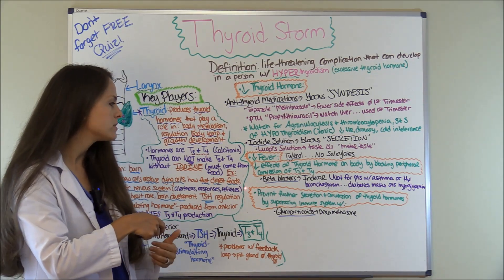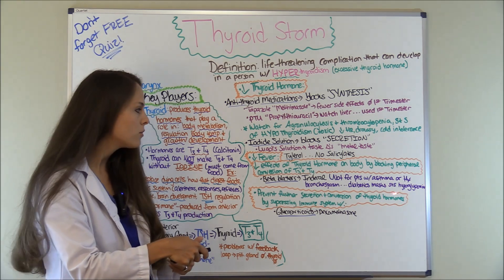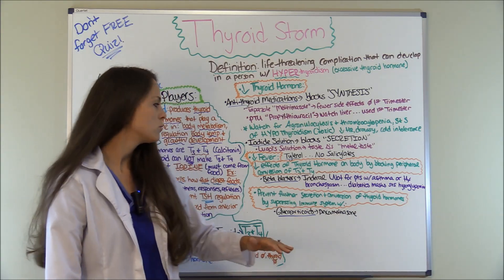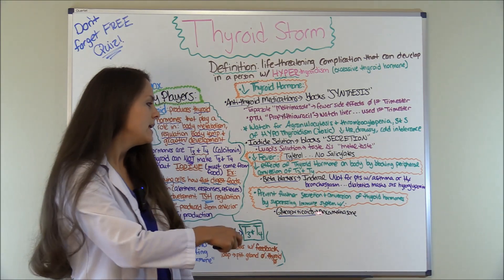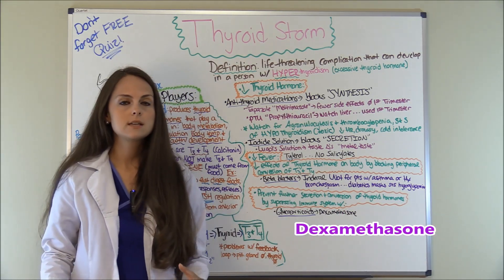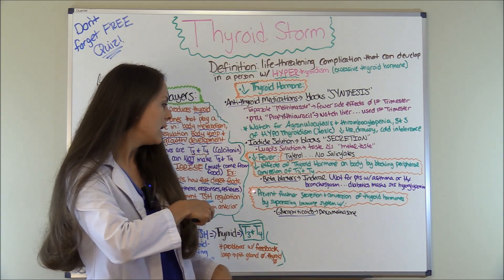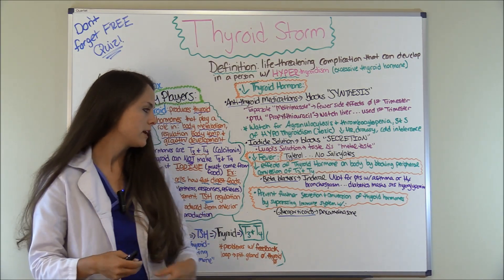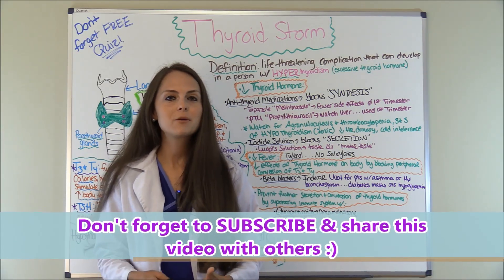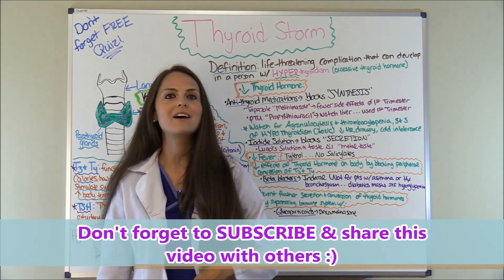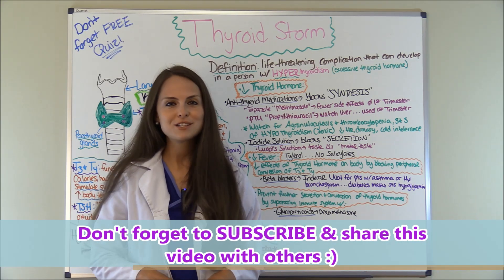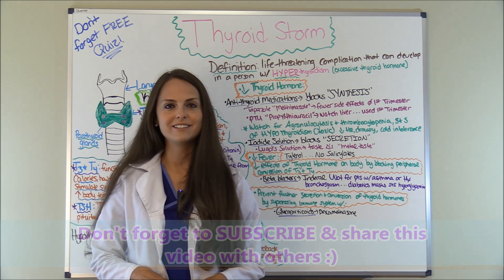Last but not least, another goal is preventing the secretion and conversion of the thyroid hormone by suppressing the immune system. A physician may order glucocorticoids like dexamethasone to help suppress the immune system so you can further decrease the conversion of the thyroid hormone. That is about thyroid storm. Go take the free quiz on my website RegisteredNurseRN.com, check out the other videos in this series about the thyroid, and thank you so much for watching — please consider subscribing to this YouTube channel.